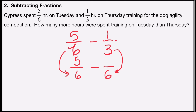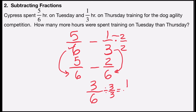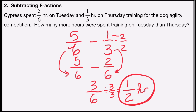Three times what number is six? That's two, so I multiply by the form of one: two over two. Two times one is two, and that becomes my new numerator. So now I have five-sixths minus two-sixths. I'll subtract the numerators: five minus two is three, and keep the same denominator, six. Three and six both have a factor of three, so I reduce: three divided by three is one, and six divided by three is two. So Cypress spent a half hour more training on Tuesday than on Thursday.